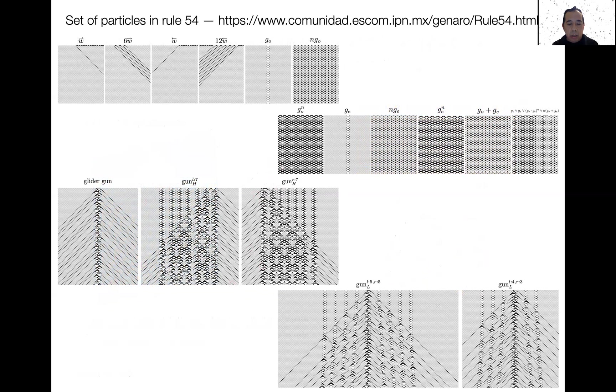In this slide, we can see the number of particles we are reported at the moment in Rule 54. These particles can evolve individually or interact, but are particles without periodic background. Also, Rule 54 has a glider gun with displacement. This is stationary. However, we can see that this gun is extensible because these extensions can travel to the left or the right side in two forms.